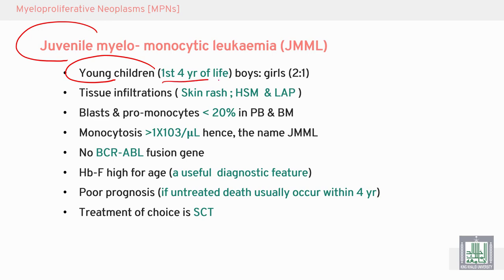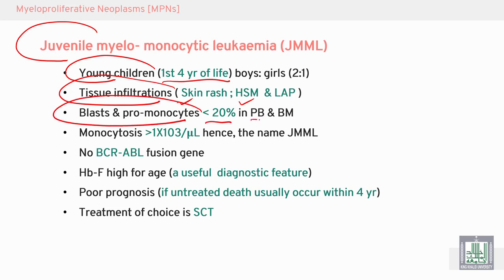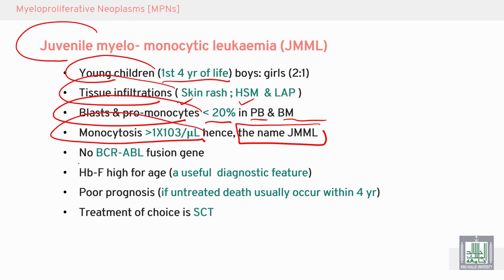Juvenile myelomonocytic leukemia occurs in the first four years of life, with boys more than girls. It is characterized by tissue infiltration — skin rash, hepatosplenomegaly — with pro-monocytes less than 20% in the peripheral blood, and monocytosis more than 1000. The name reflects its features: juvenile from children, myelomonocytic from monocytosis, and BCR-ABL PCR is negative.